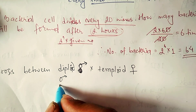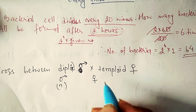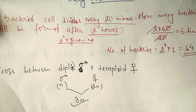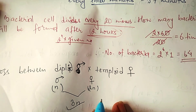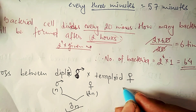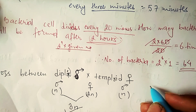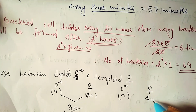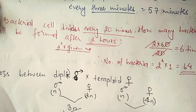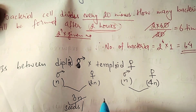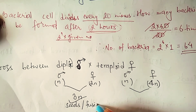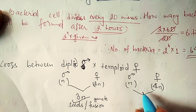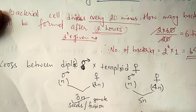When a cross occurs between a male (n) and female (2n), the resulting seed will be 3n — a triploid organism. Regarding the endosperm: the male contributes n and the female polar bodies are 2n, making the endospore 3n. With a 4n female contribution, the endosperm becomes 5n.